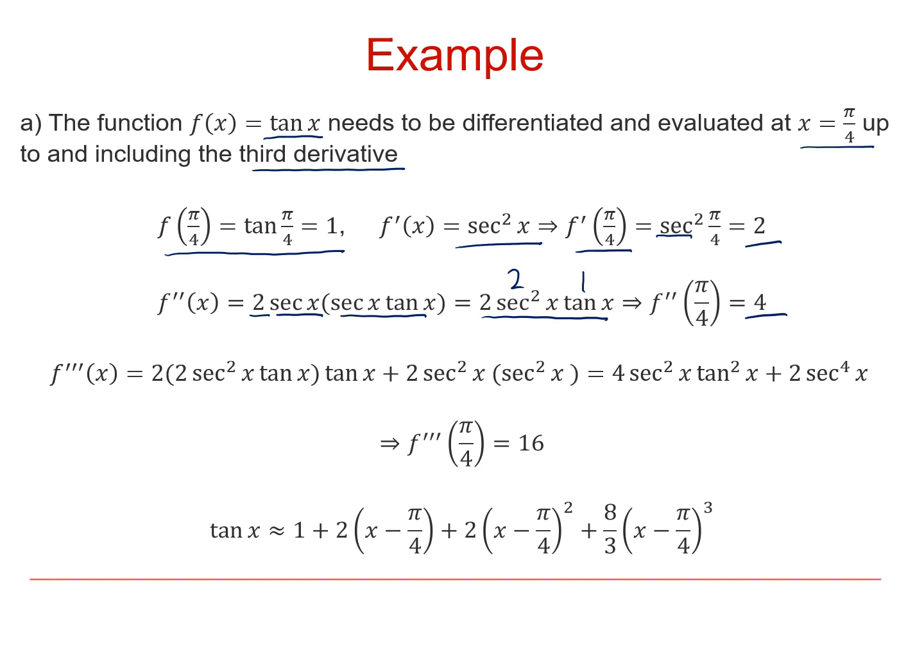Differentiating 2 sec squared x tan x. Again we can use the product rule. We end up taking sec squared x and differentiating that. Well we've already worked that out so we know that that is 2 sec squared x tan x. So we're differentiating the first part, the sec squared x, leaving tan x alone and 2 alone. And the same again for the alternative part. We leave the 2 sec squared x alone, differentiate tan x and it gives us sec squared x. Multiplying out and collecting terms we end up with this expression.